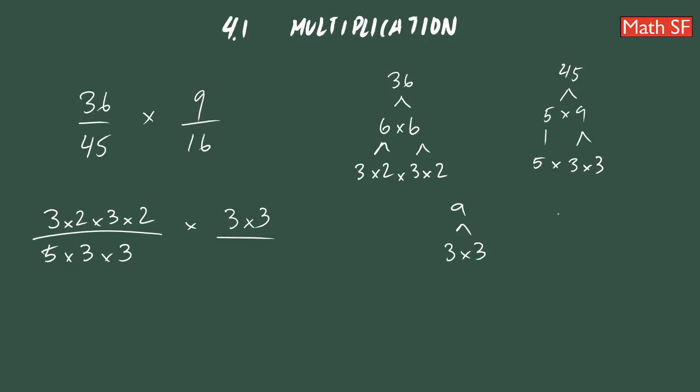And 16, same idea. 16 will be a 4 times 4. And this 4 can be written as a 2 times 2. And this other 4, 2 times 2. So 16 is all of this. So it will be 2 times 2 times 2 times 2.